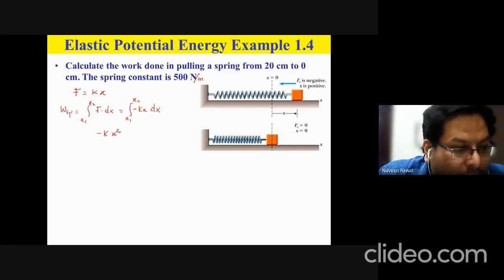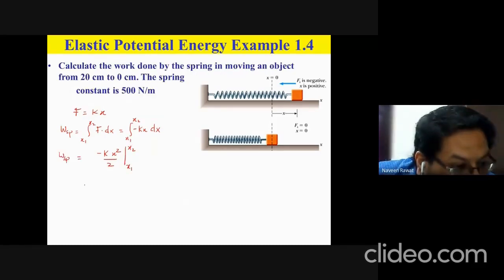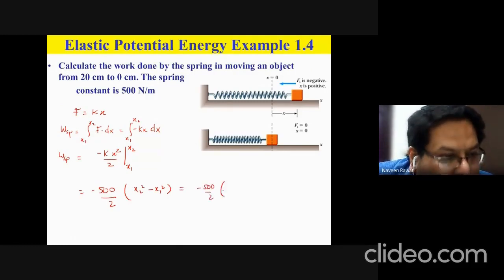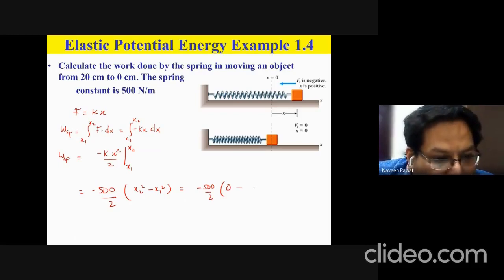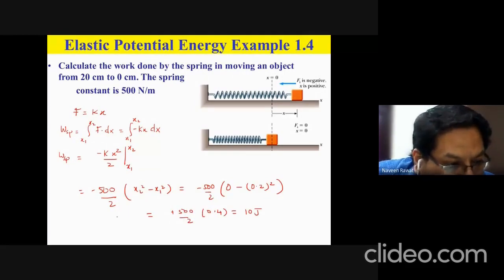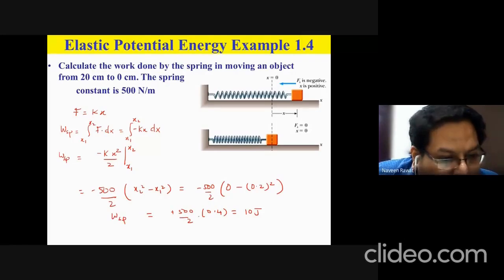Evaluating the integral of minus kx from x₁ to x₂ gives minus k times x²/2 evaluated between x₁ and x₂. So we have minus 500 divided by 2, times (x₂² minus x₁²). With x₂ = 0 and x₁ = 0.2 meters, we get a minus and a minus that cancel, giving positive 500 divided by 2 times 0.04, which equals 10 joules. The work done by the spring is positive, as expected.